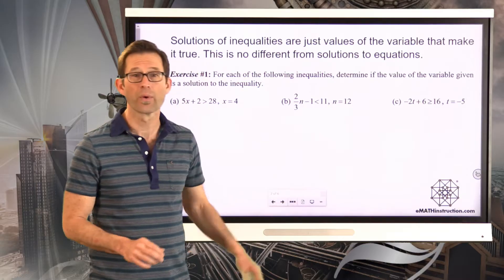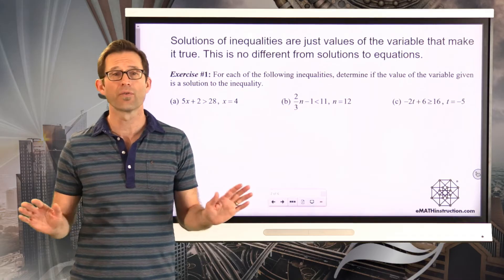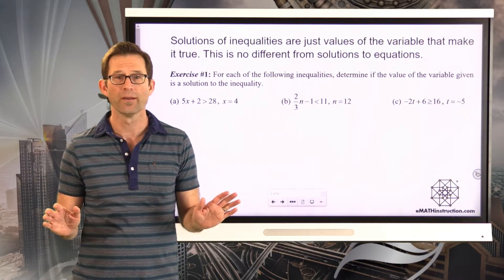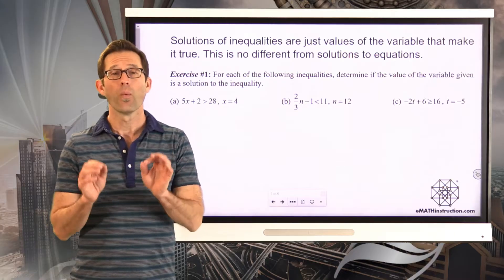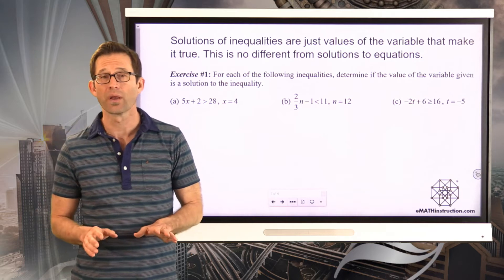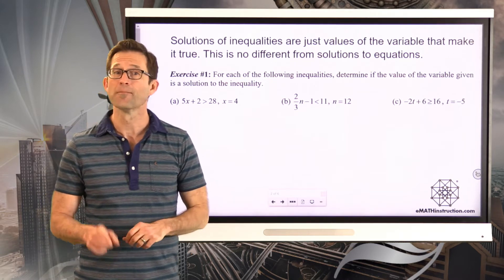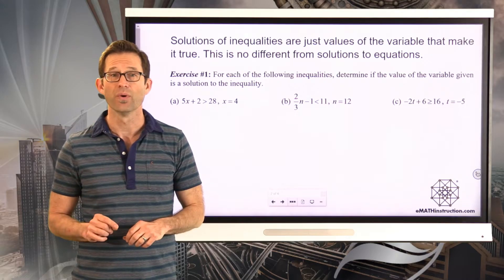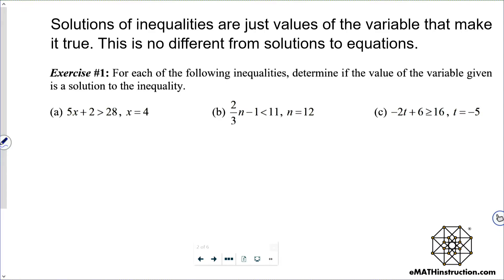Solutions to inequalities are just values of the variable that make it true — that's no different than a solution to an equation. We can tell at any point in time whether or not a particular value of x, n, t, or whatever is a solution to an inequality by taking that value, plugging it into the inequality, and seeing if it makes it true. For each of the following inequalities, determine if the value of the variable given is a solution.